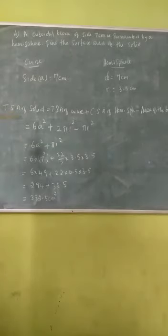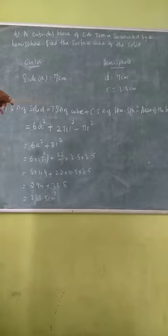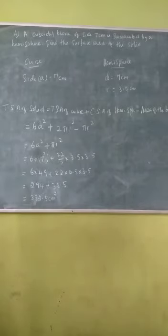Total surface area of the solid. So I want to find total surface area of a cube, 6a square, not the curved surface area. Total surface area of a cube plus curved surface area of a hemisphere, that is 2πr². So why do we add the area of the base of the hemisphere? Because we have 6a².